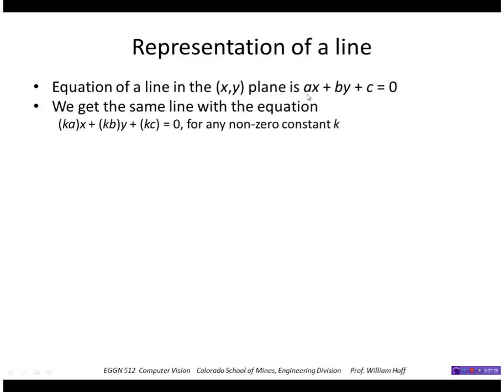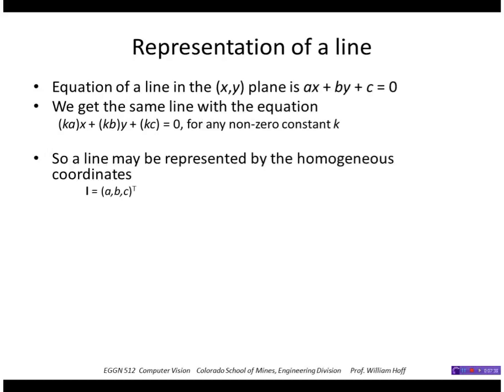So let's see how to draw epipolar lines. So let's look at the representation of a line in 2D. So in the X, Y plane, the equation of a line can be written as AX plus BY plus C equals 0. Of course, those parameters are not unique because if I multiply that equation by any constant K, I still get the same value. So A, B, C are only known up to a scale factor. Or we can think of them as a homogeneous coordinate, a vector in homogeneous coordinates called L.